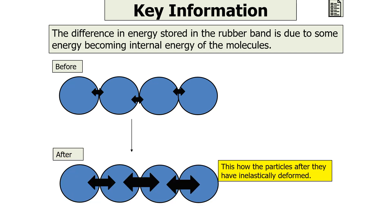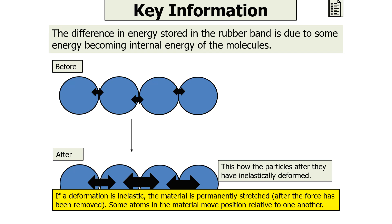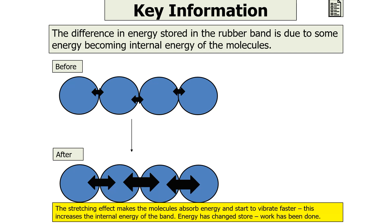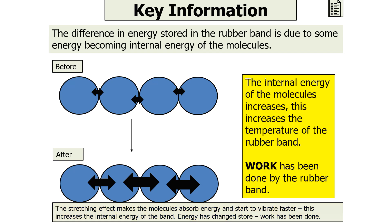Consider what happens to the particles after inelastic deformation. If the deformation is inelastic or plastic, the material is permanently stretched after the force is removed. Some atoms in the material move position relative to one another, and when the load is removed, the atoms do not return to their original positions — the material has been stretched past its elastic limit. The stretching effect makes the molecules absorb energy and vibrate faster, increasing the internal energy of the band and increasing the temperature of the rubber band. Work has been done by the rubber band.